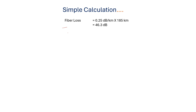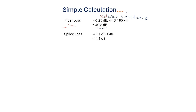We will start with simple calculations. First, we find fiber loss. Fiber loss equals attenuation alpha (dB/km) multiplied by distance. Alpha is 0.25 dB/km and the distance is 185 km, giving a fiber loss of 46.25 dB — approximately 46.3 dB. This is the total fiber loss for the communication link. Second, splice loss: number of splices is 46, and each splice loss is 0.1 dB, so total splice loss is 4.6 dB.